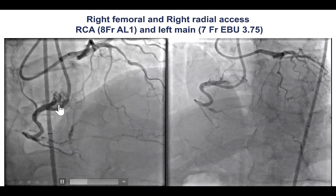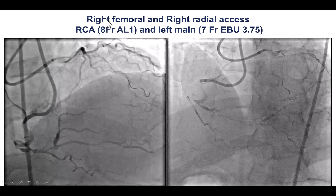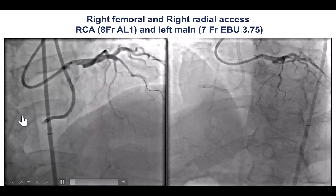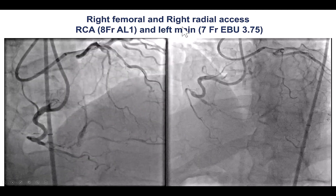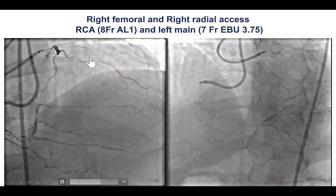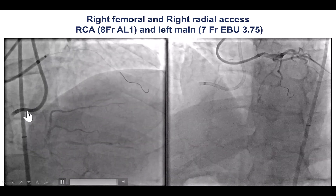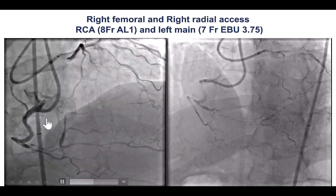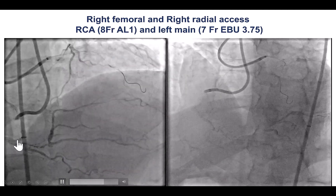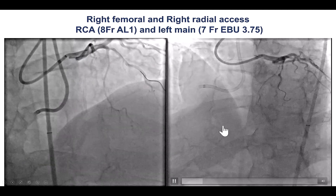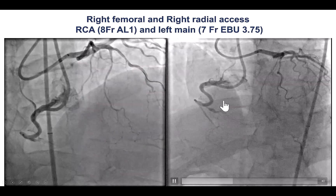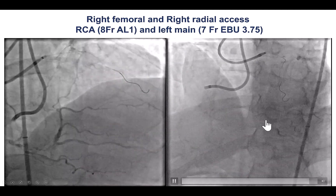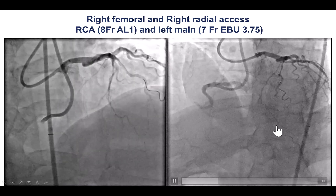This is a dual injection, done using right femoral and right radial axis. The right femoral was used for the RCA, the target CTO vessel, and the right radial was used for engaging the left main. A seven French was used on the left main and an eight French on the RCA. There is significant tortuosity in the proximal and mid portion of the right coronary artery, an occlusion of the distal segment, ambiguity of the proximal cap, and the occlusion goes all the way to the bifurcation of the PDA and the right posterior lateral.